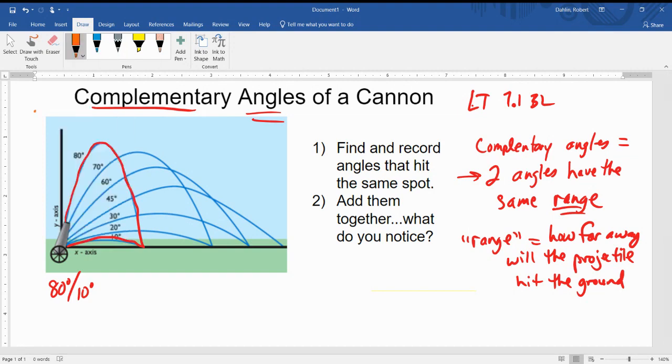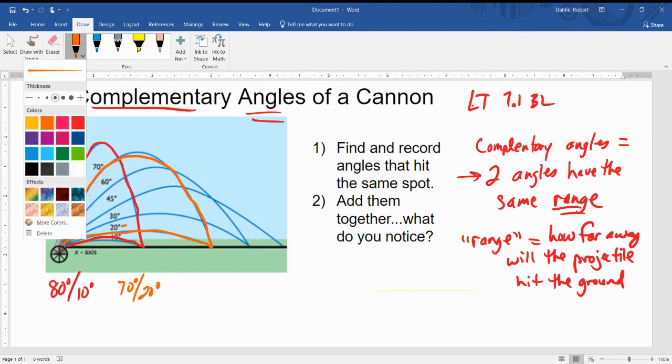Go with the next one. Okay, so we have 70 degrees here. And we also noticed there's another one that hit in the same spot, so it's kind of working backwards. And that was 20 degrees. So 70 degrees and 20 degrees. And do the same thing with a different color.